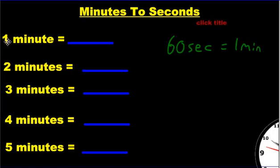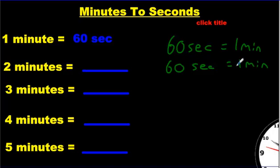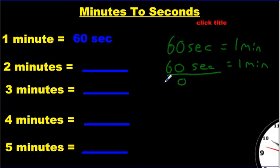One minute — how many seconds is that? It's 60. What about two minutes? Two minutes is going to be two 60s. So another 60 seconds will be another minute, giving us two minutes. If you add these together: zero plus zero is zero, and six tens and six tens is 12 tens, so you get 120 seconds.